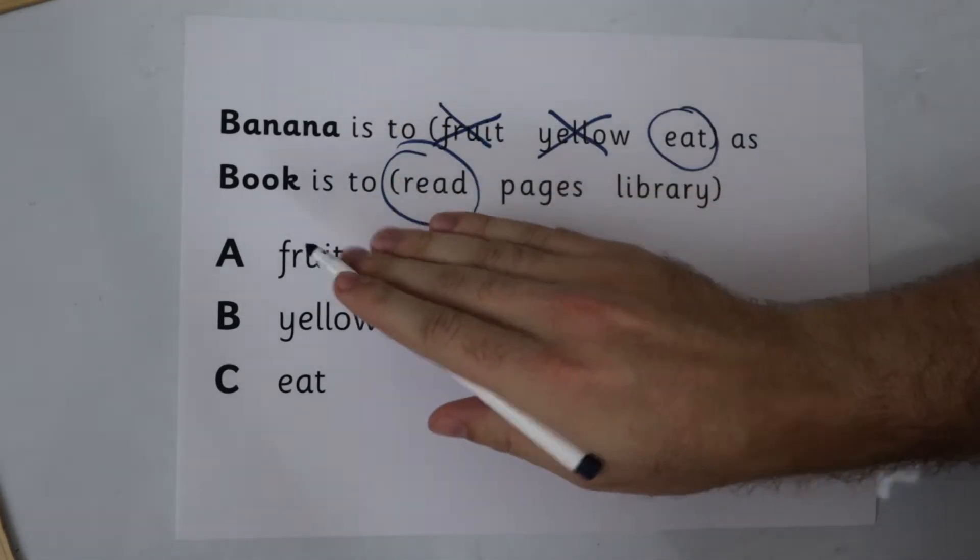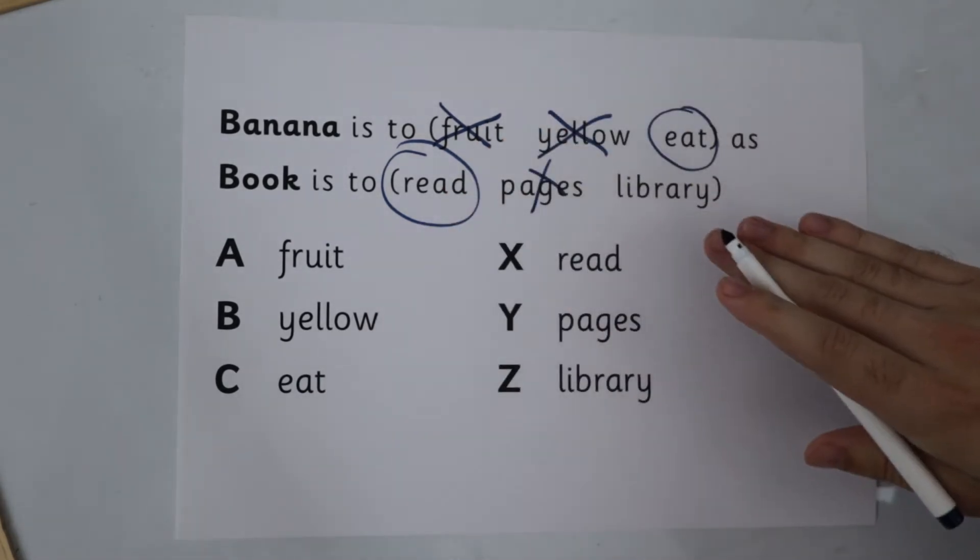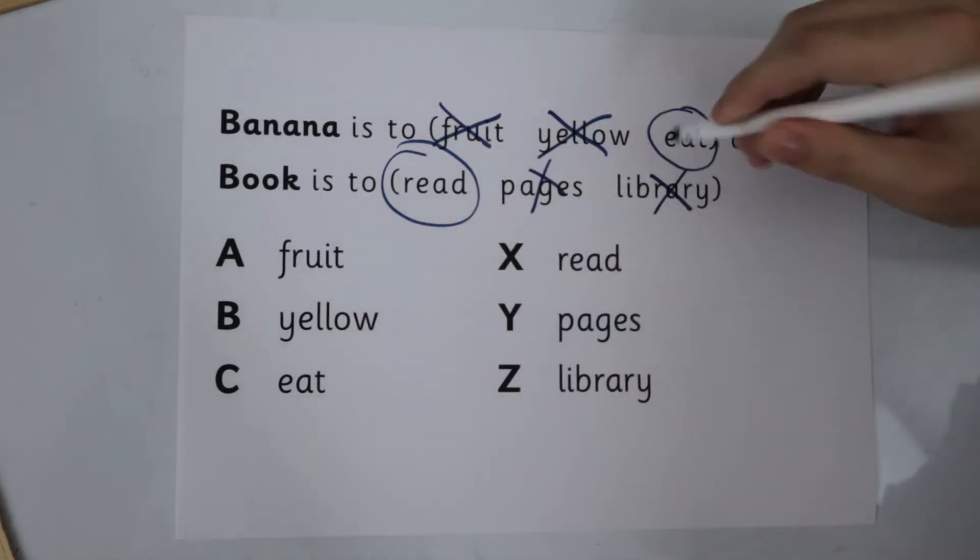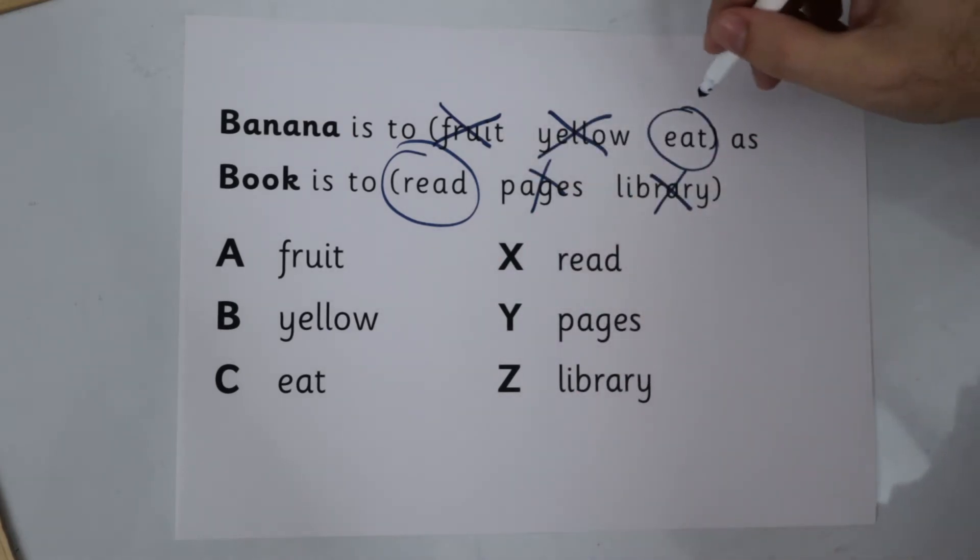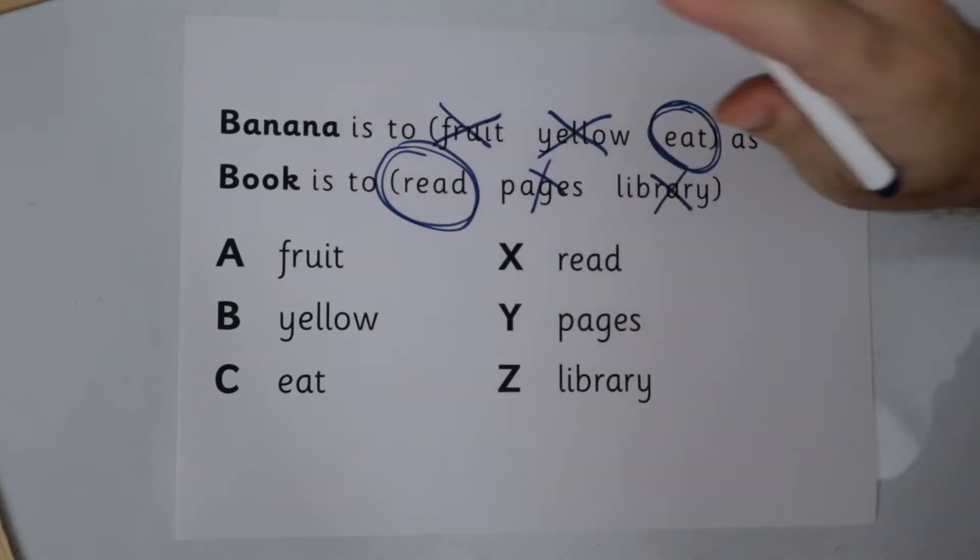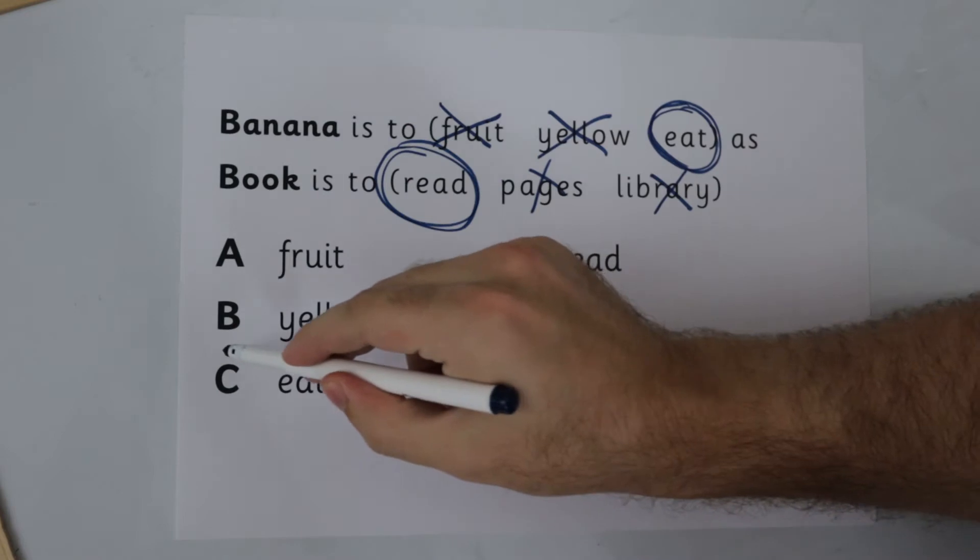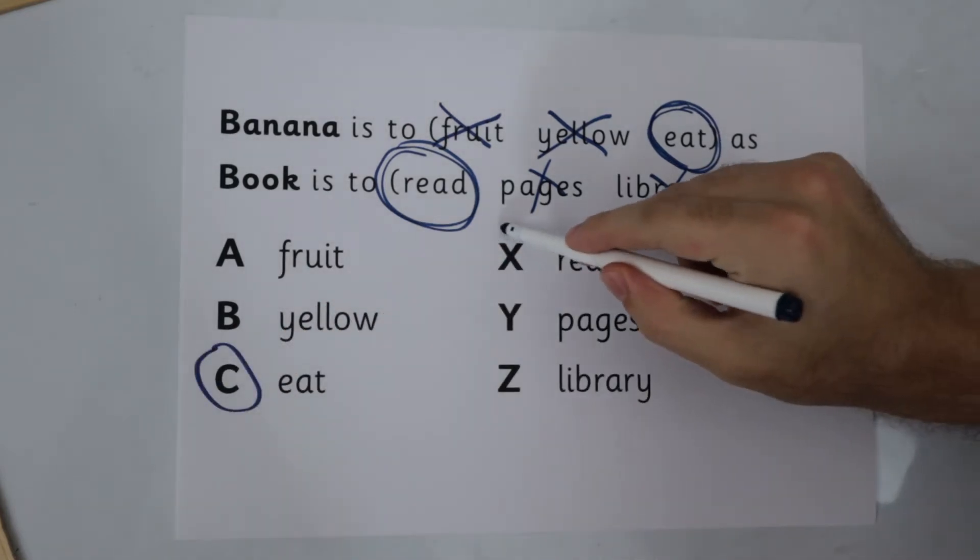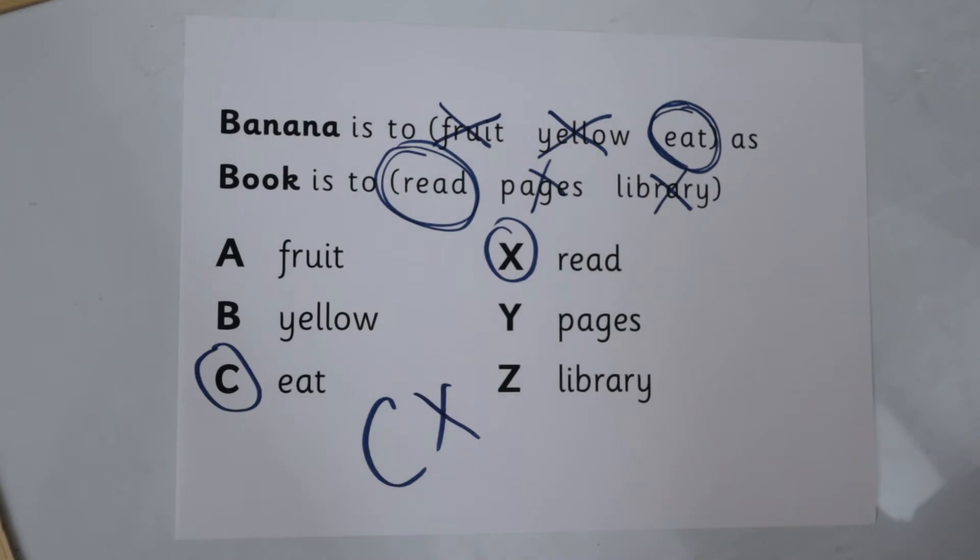We can pages a book, nope. And we can library a book, absolutely not. So we know having used our technique and gone through deduction that banana is to eat because we eat a banana is the same as book is to read because we read a book. Our answer must be C for eat and X for read, C, X.